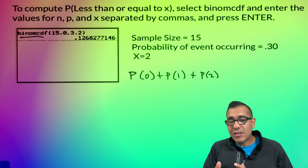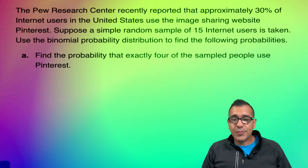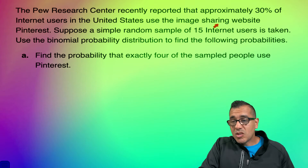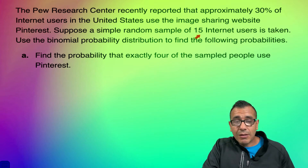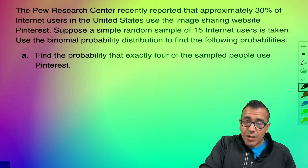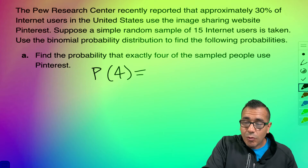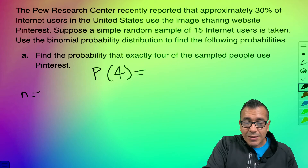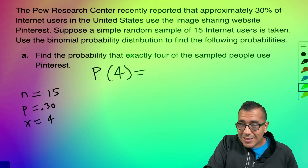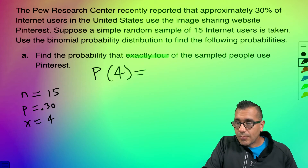Here's our example: a research center reports that approximately 30% of internet users in the United States use the image-sharing website Pinterest. Suppose a random sample of 15 internet users is taken — that's our N value. We'll use the binomial probability distribution to find several probabilities. First: find the probability that exactly four users use Pinterest. So N = 15, probability = 0.30, and X = 4.